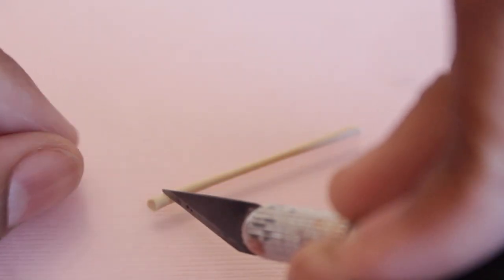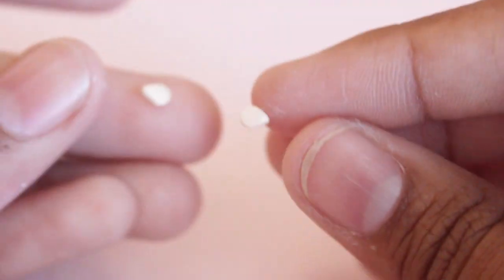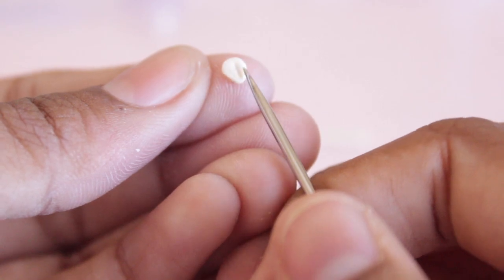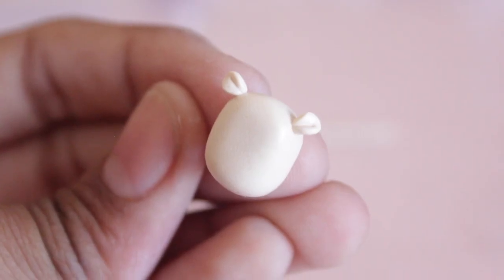To make the ears, I took two pieces of the clay and shaped it into a teardrop and indented it. I attached the ears on with some liquid clay.